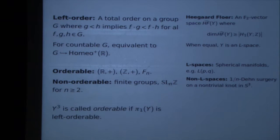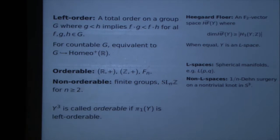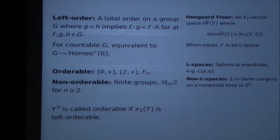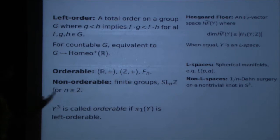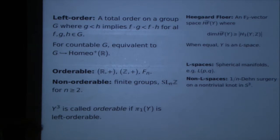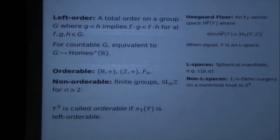What are some examples of non-orderable groups? If the group is finite, or more generally if it has torsion, then it can't be orderable, because if an element G is bigger than one, then G squared is bigger than one, and G cubed is bigger than one, which prevents any power of G from being the identity. For conciseness of notation, I'm going to say that a three-manifold itself is orderable if its fundamental group is left orderable.